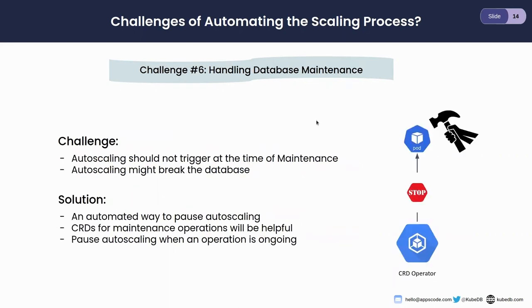The next challenge is handling database maintenance. When the database is going through maintenance — such as horizontal scaling, vertical scaling, reconfiguration, or restart — the auto-scaler shouldn't trigger any auto-scaling operation, as running one during maintenance might break the database. Having a CRD for each maintenance operation allows us to check if any ongoing maintenance operation exists. The auto-scaler checks the status of these objects and won't trigger auto-scaling if any of them is currently ongoing.